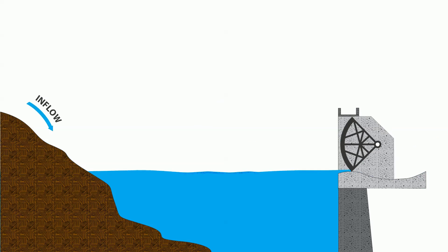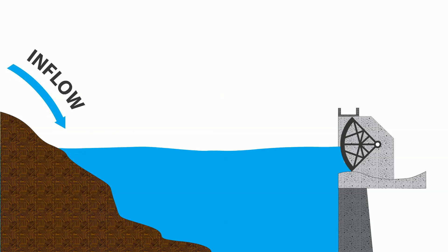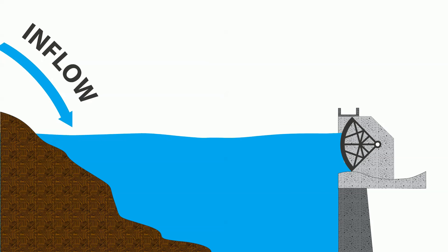At the beginning of a flood event, the inflow increases. The spillway gates are closed and the surface elevation of the reservoir rises.